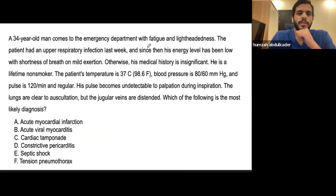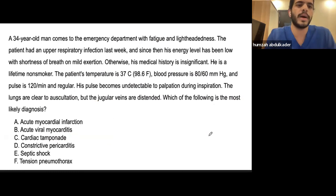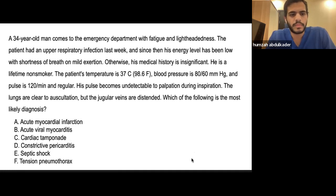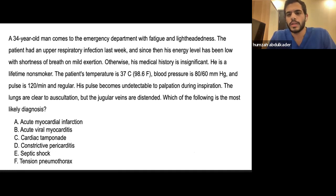A 34-year-old man comes to the emergency department with fatigue and lightheadedness. He had an upper respiratory tract infection last week and since then has had low energy with shortness of breath on mild exertion. Medical history is otherwise insignificant; lifetime non-smoker. Temperature 37, blood pressure 80/60, pulse 120. His pulse becomes undetectable during palpation on inspiration. Lungs are clear to auscultation. Jugular veins are distended. What is the most likely diagnosis?